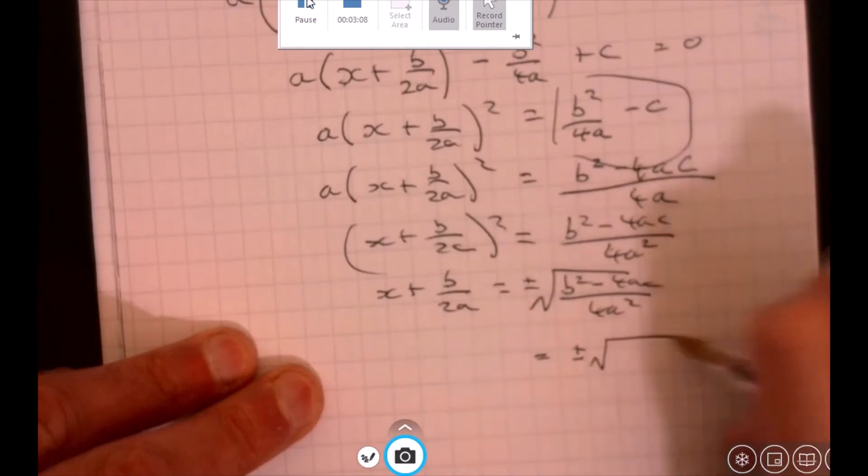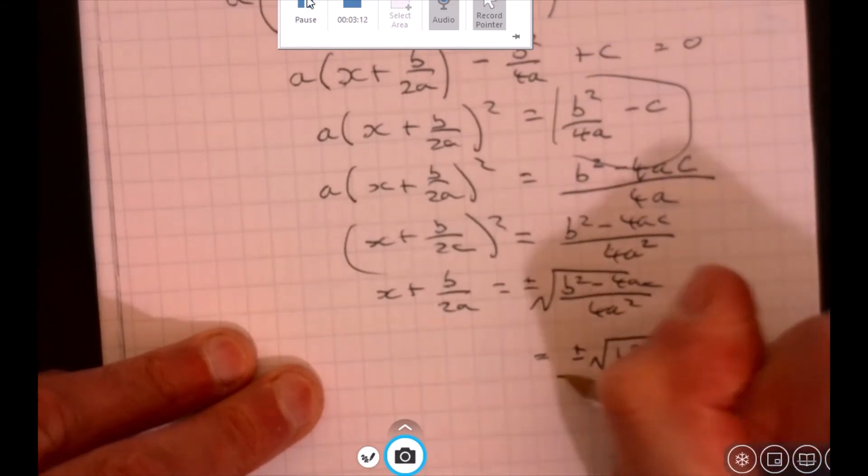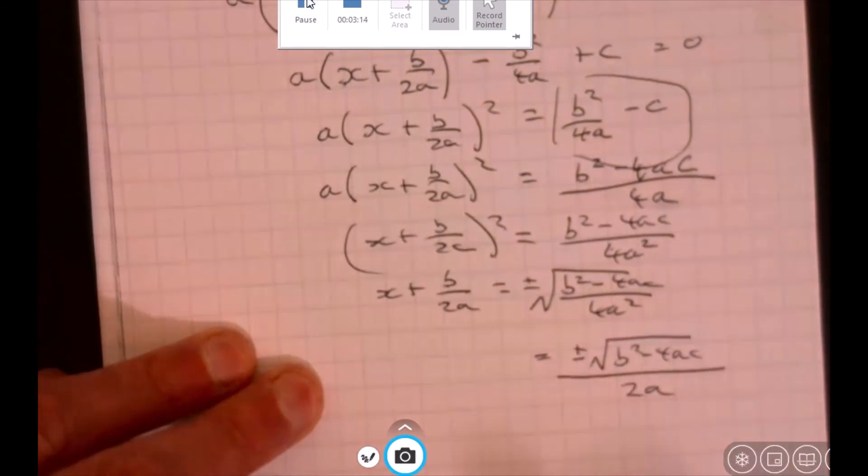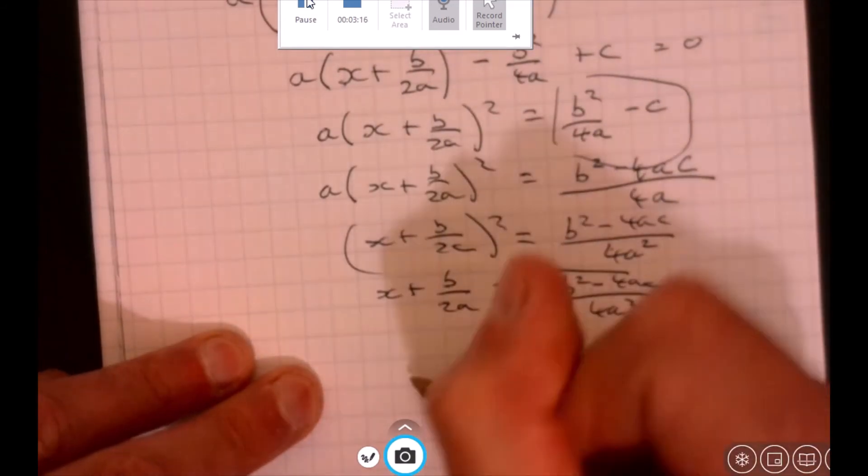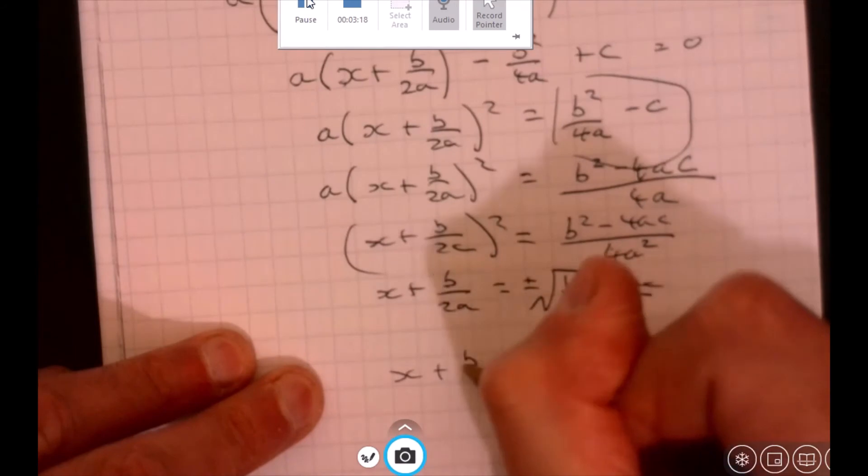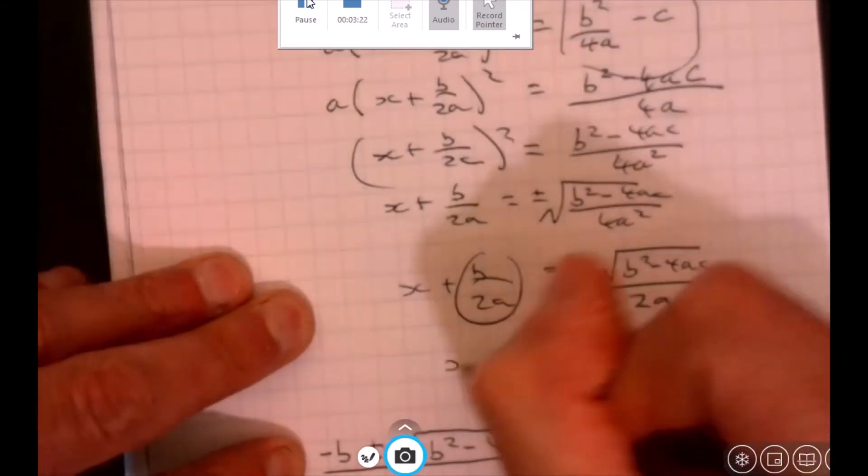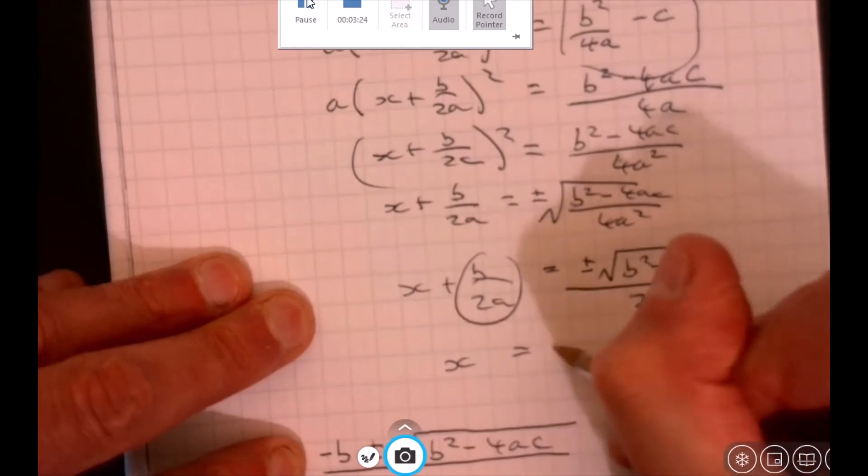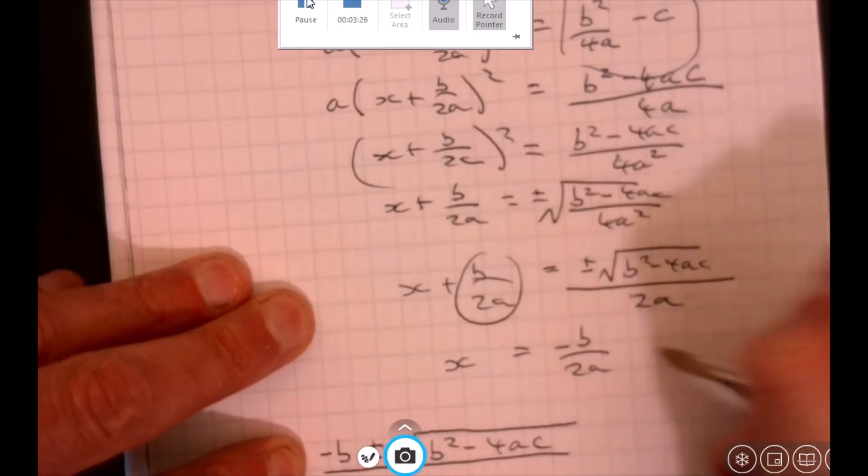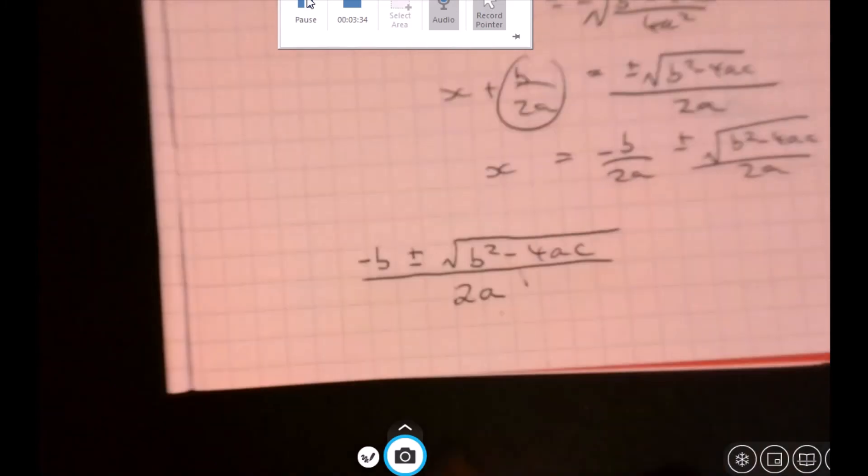So we've got plus minus, and then we're going to have b squared minus 4ac, and that's all over 2a. And then we've got x plus b over 2a. Take away that bit from both sides and we have x equals minus b over 2a plus minus the square root of b squared minus 4ac over 2a. Combine that together and where are we? We're there. Thank you.